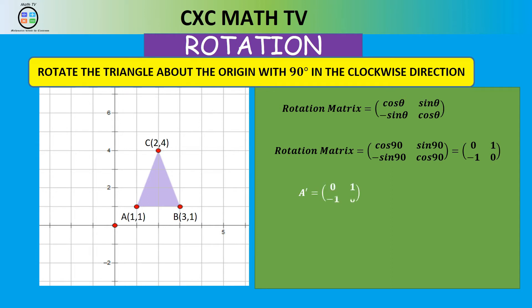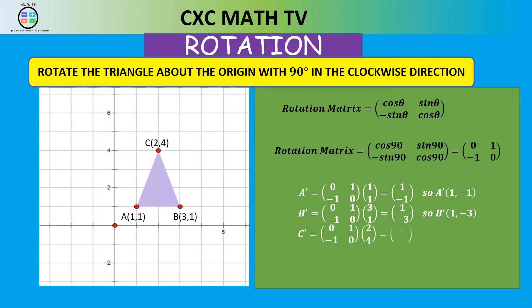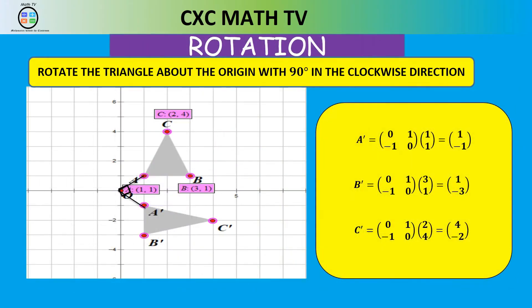The image point equals the rotation matrix times the object point. So A′ = [0, 1; −1, 0] × (1,1) = (1, −1). For B′, we multiply the rotation matrix by point B, and for C = (2,4) we get C′ = (4, −2). We plot A′, B′, C′ on the diagram — that triangle is our image. The black lines from the origin confirm the 90-degree rotation.